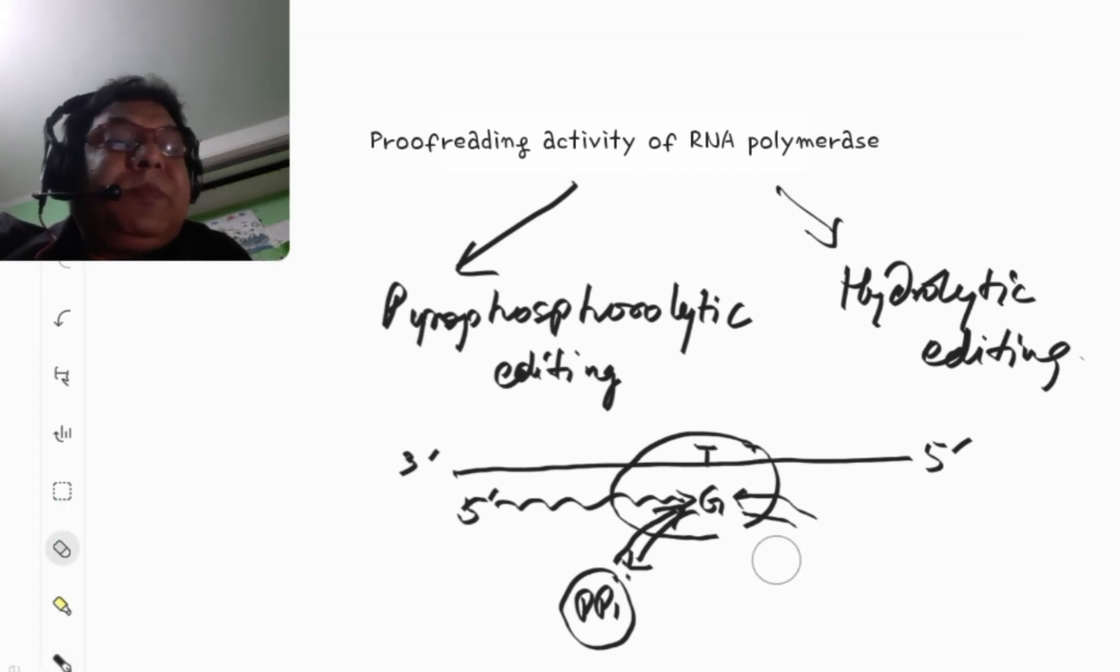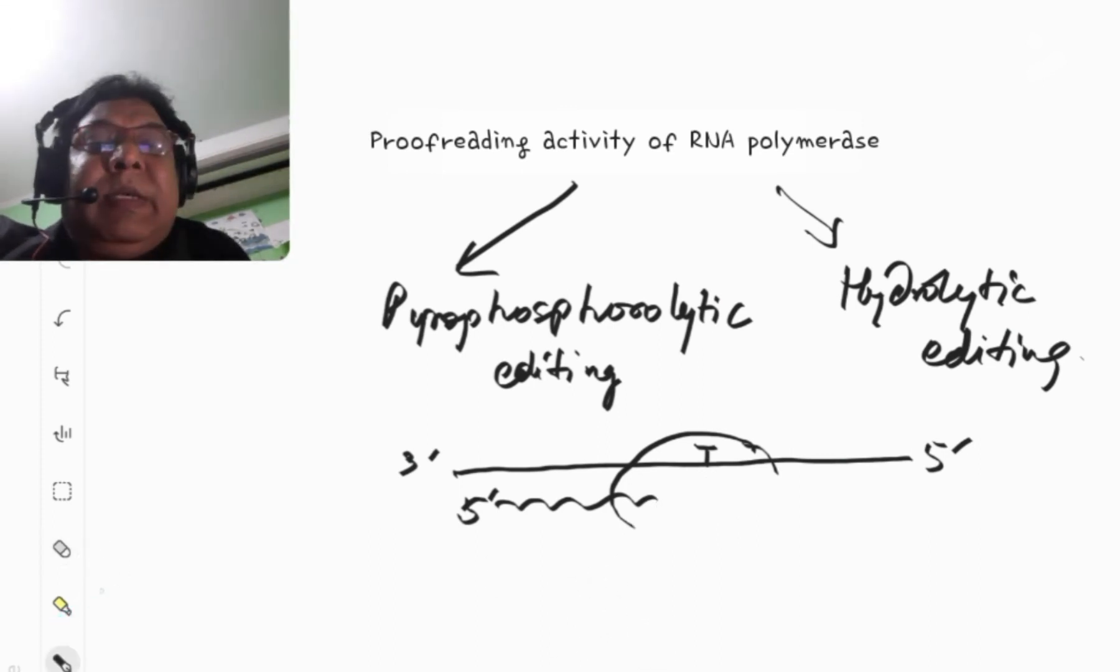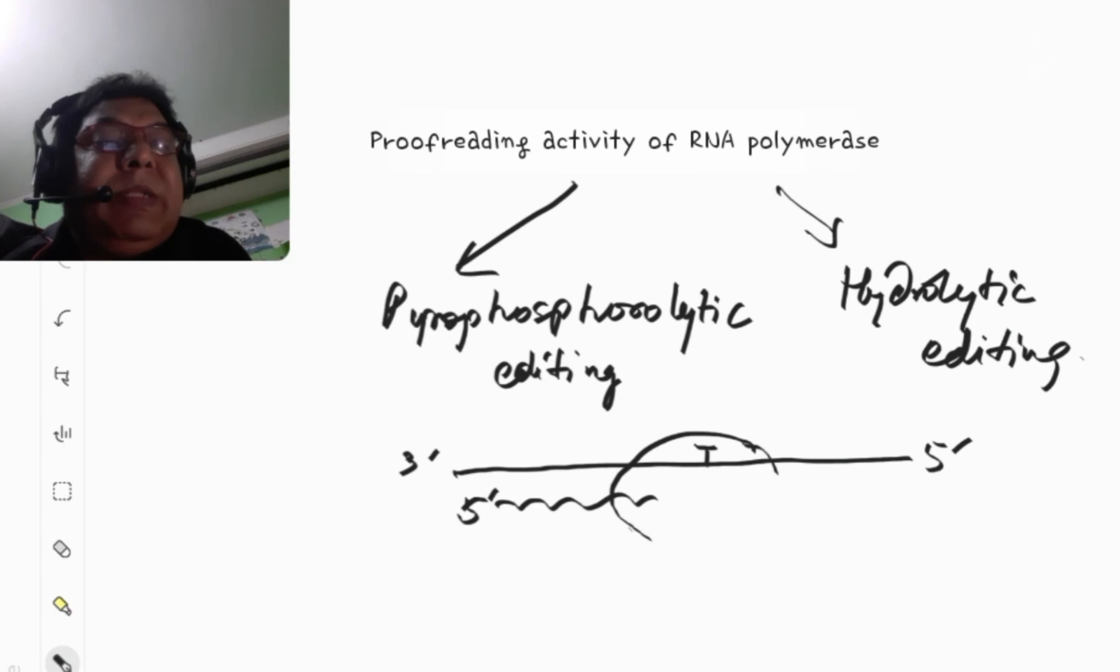The other one, let me show in the same diagram over here, that if the RNA polymerase fails to remove the G residue by this pyrophosphorylytic editing, it will use this hydrolytic editing mechanism. In that process, what happens, the RNA polymerase, it goes reverse translocation, this is called reverse translocation.